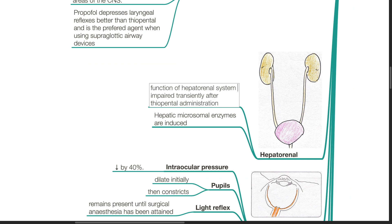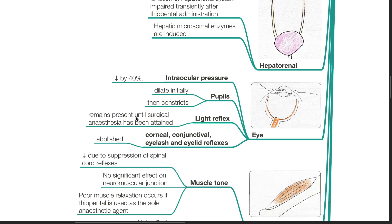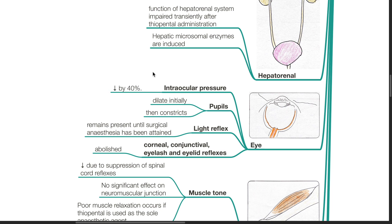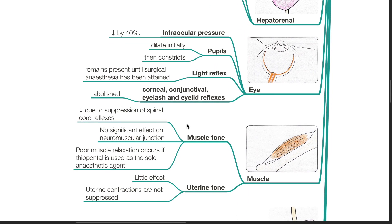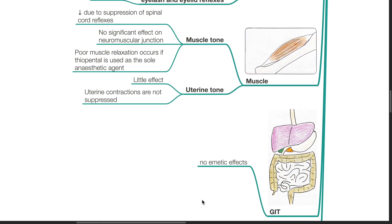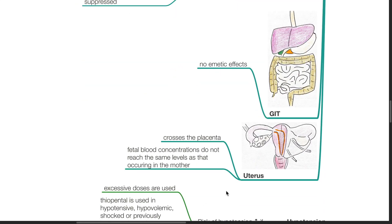The function of the hepatorenal system is impaired transiently after thiopenthal administration and hepatic microsomal enzymes are induced by thiopenthal. There is reduction of intraocular pressure by up to 40%. The pupils dilate initially then constrict. Light reflex remains present until surgical anesthesia has been attained. Corneal, conjunctival, eyelash, and eyelid reflexes are abolished by thiopenthal. There is reduction in muscle tone due to suppression of spinal cord reflexes, with no significant effect on the neuromuscular junction. Poor muscle relaxation occurs if thiopenthal is used as the sole anesthetic agent. Regarding uterine tone, there is little effect from thiopenthal and uterine contractions are not suppressed. Thiopenthal does not cause emetic effects. Thiopenthal crosses the placenta, but fetal blood concentrations do not reach the same levels as in the mother.